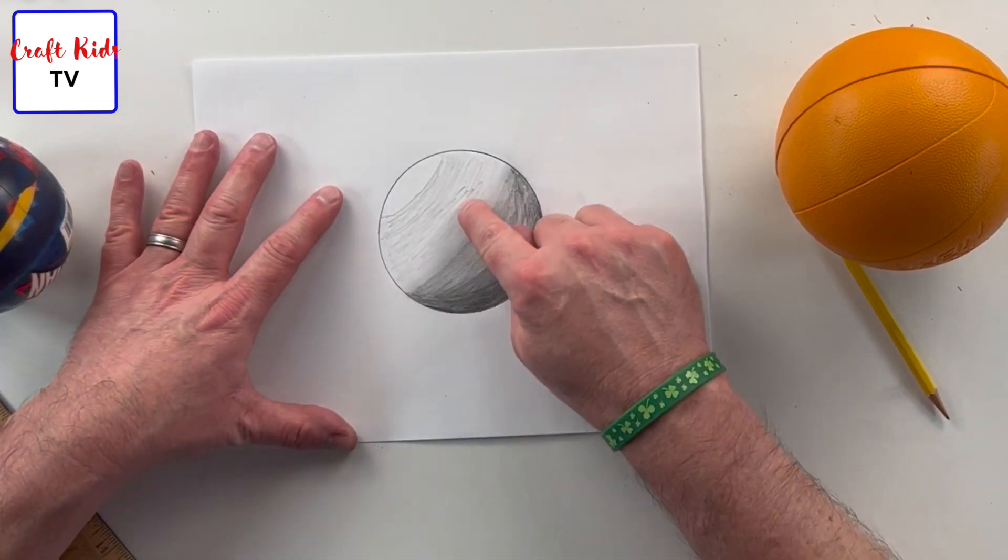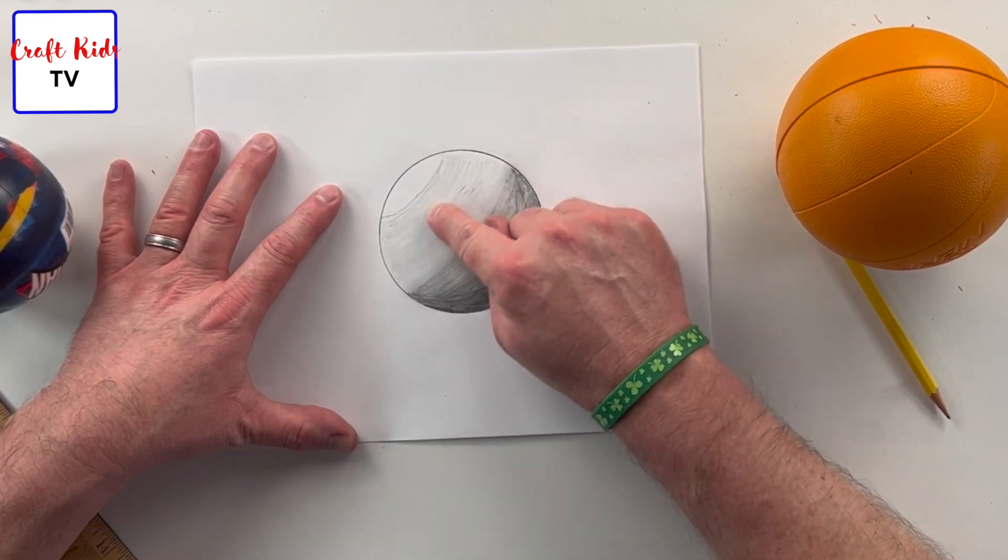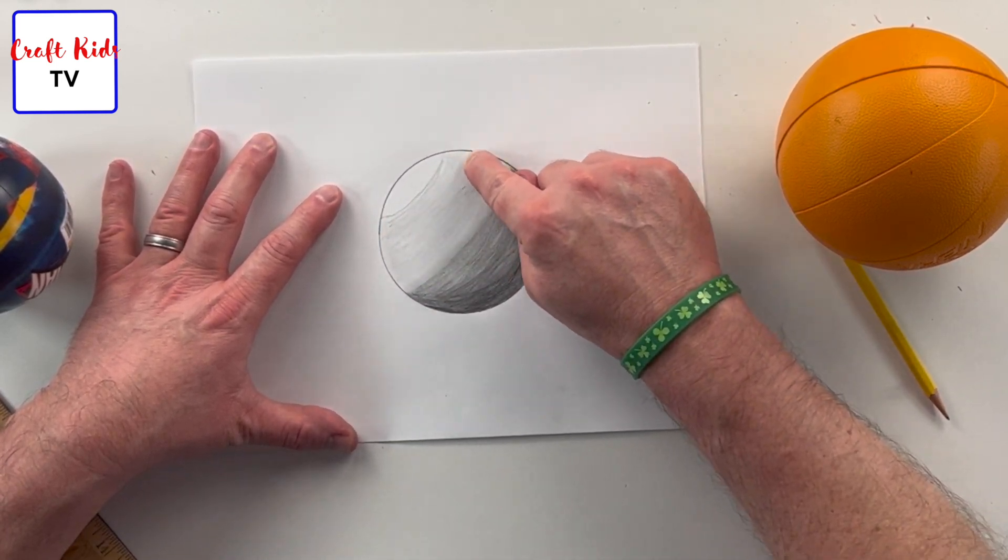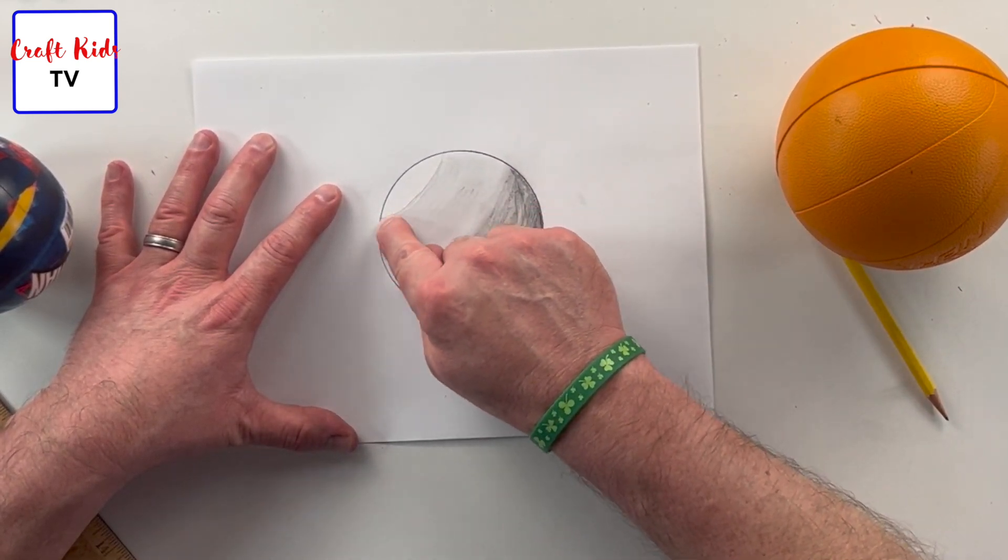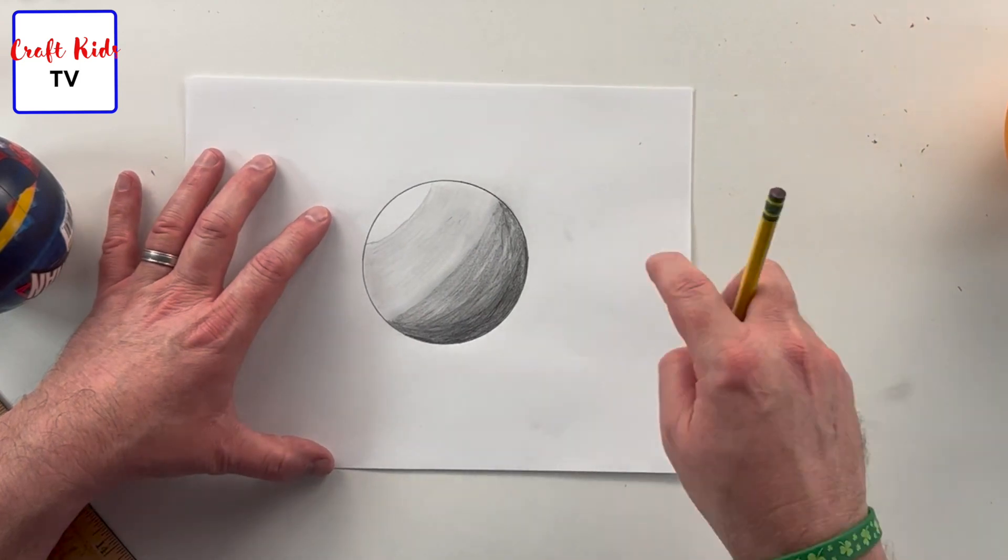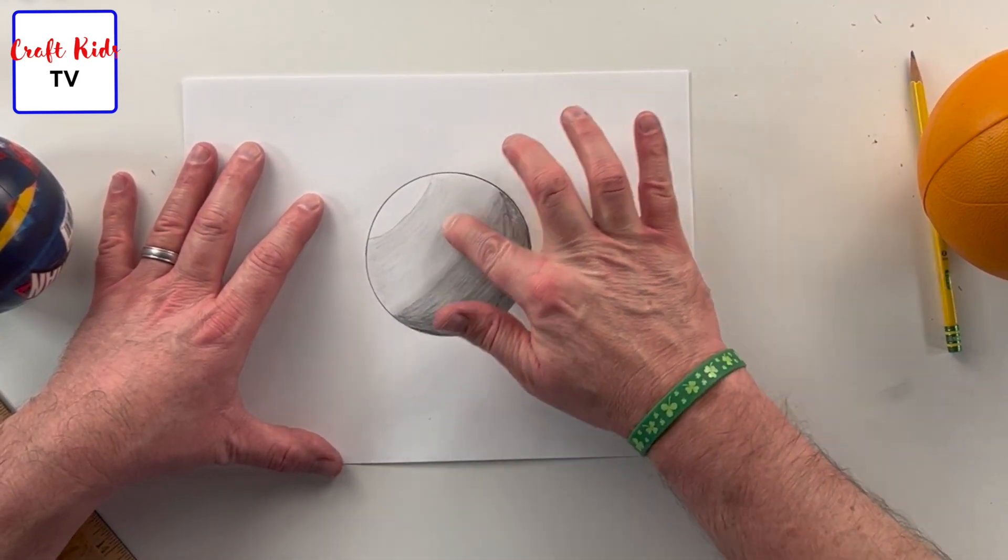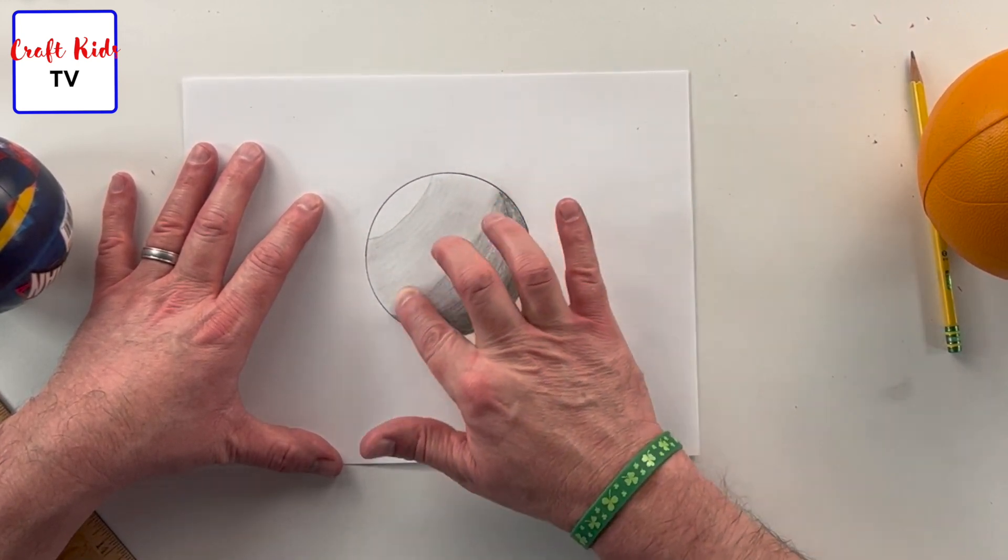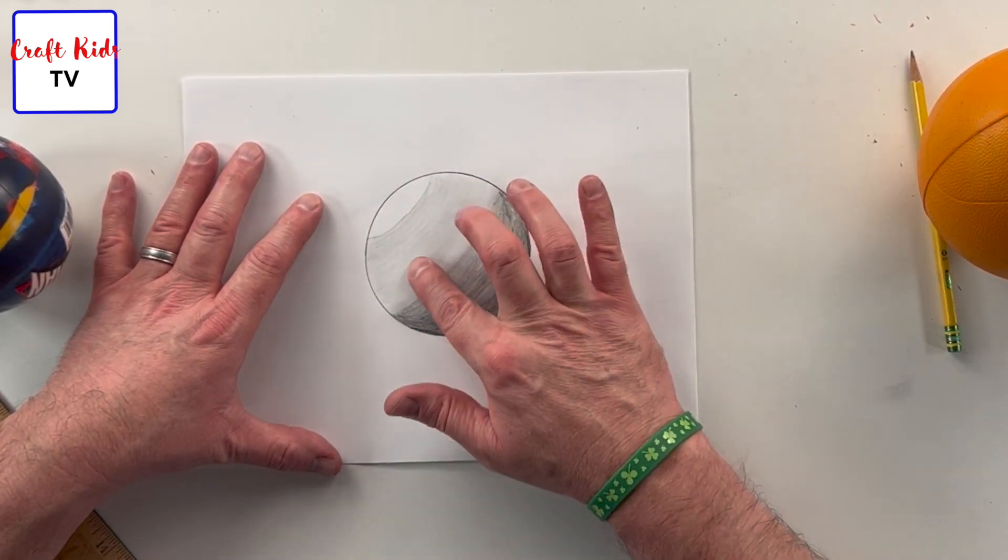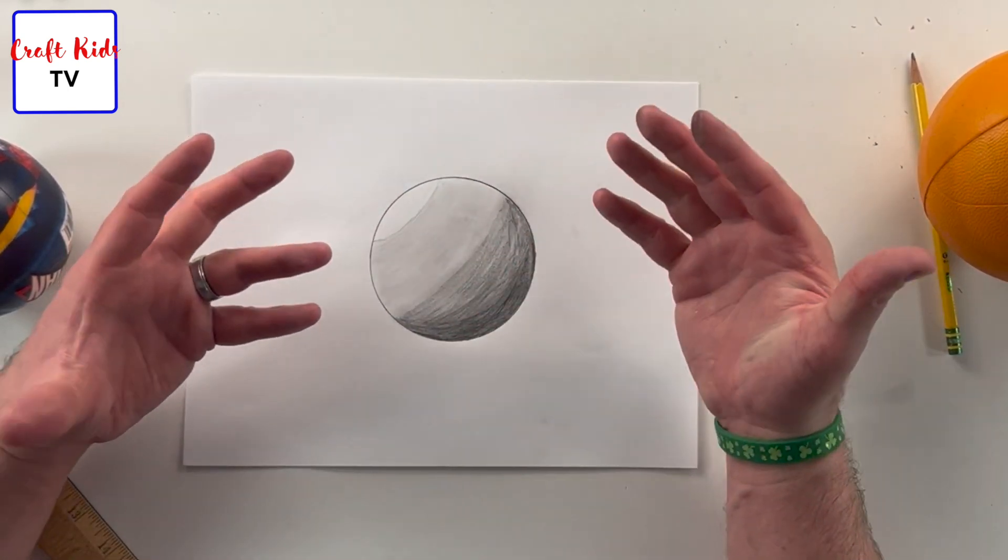Turn it back around, use my finger again, start to smudge those with my finger. If anything's too dark then I don't like it, just quickly go over with the eraser.